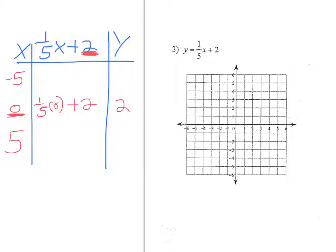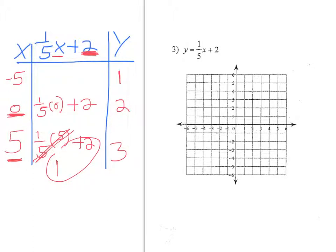If you plugged in negative 5, you are going to get 1. If you plug in 5 for x, you're going to get 1/5 times 5 plus 2. This cancels out and just gives you 1, and then 1 plus 2 gives us 3. So when I list the ordered pairs: negative 5, 1 — no ugly fractions — then (0, 2), and then (5, 3).